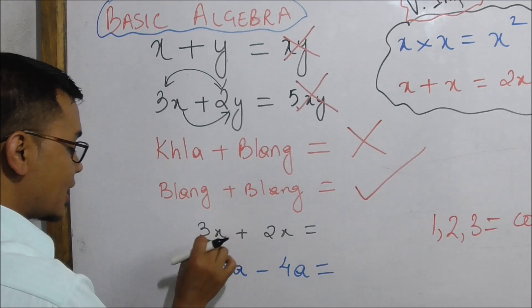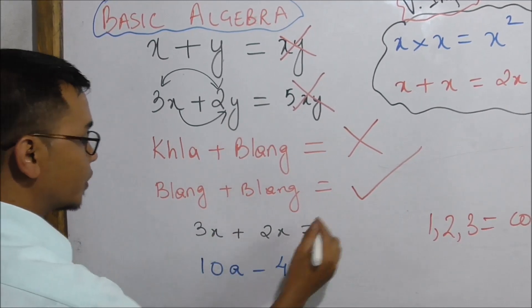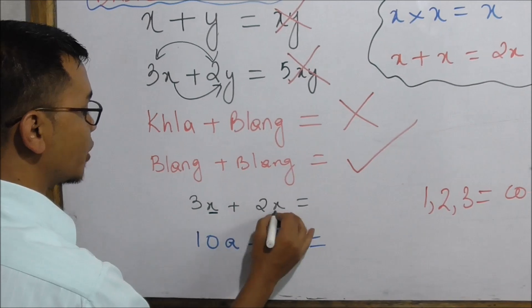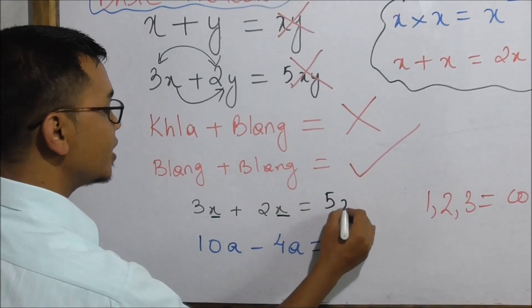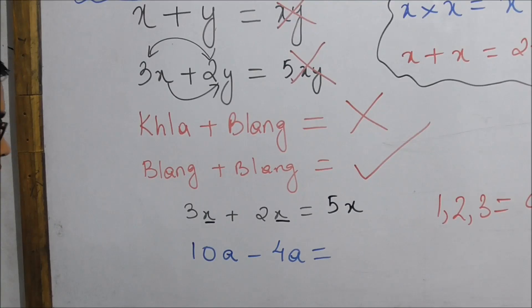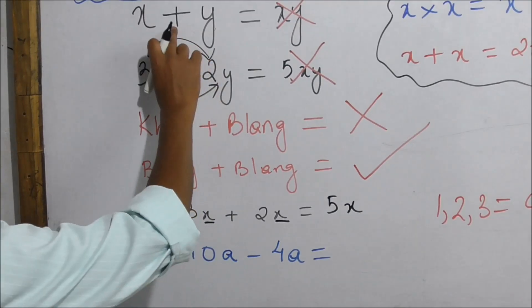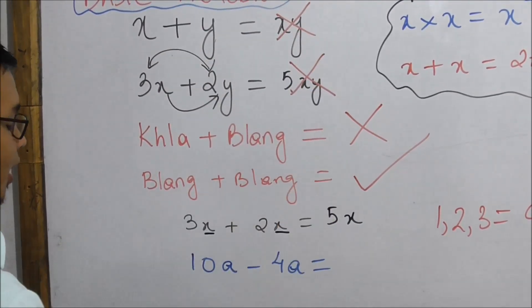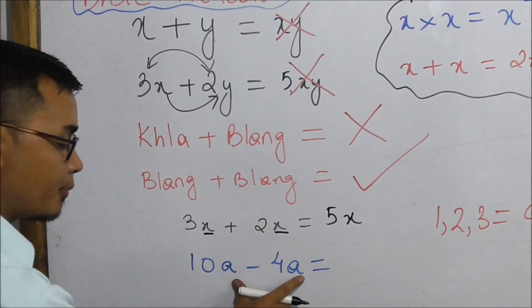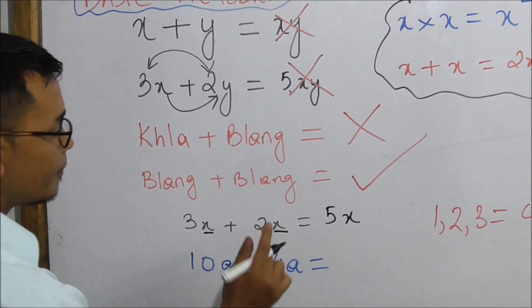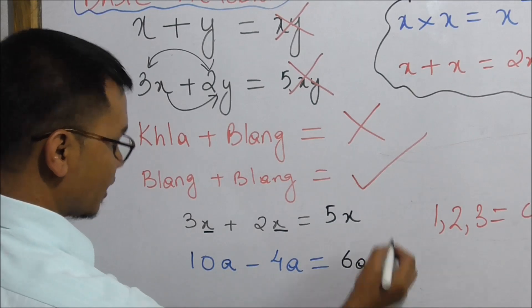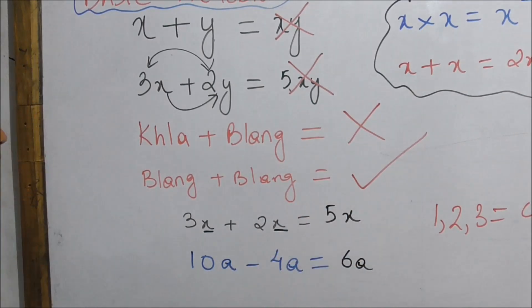If you think about this, you can see 3X plus 2X. If you want a minus, you will get 4 minus. You will get 10 minus, 4 minus, 6 minus 6.